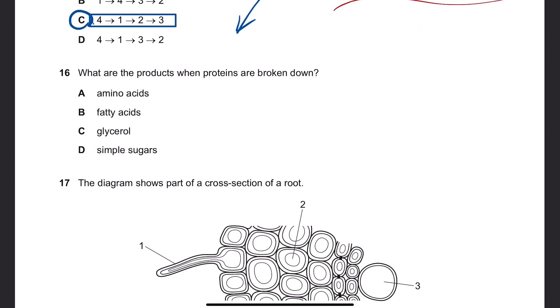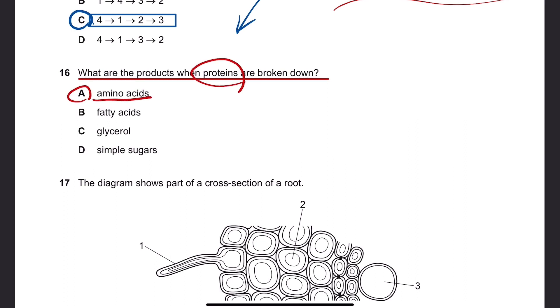Number 16. What are the products when proteins are broken down? Proteins are made of amino acids. So the answer is A.